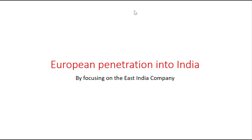This is the first episode discussing European penetration into the Indian subcontinent, happening around the 18th century just after Mughal disintegration, when regional states were coming up as major power centers. That was the time when various European powers like Portuguese, Spanish, English, and French were coming through various ports of India and trying to create spheres of influence. We are specifically focusing on the East India Company's history until they were struggling with other European powers.